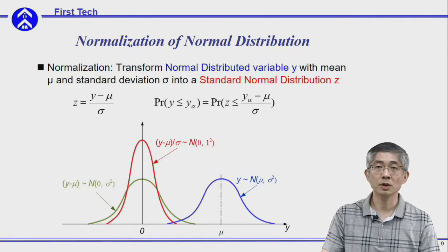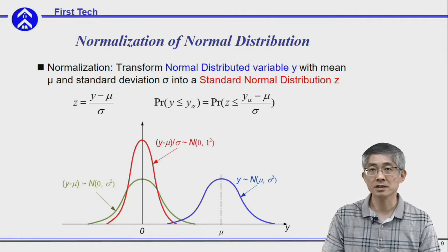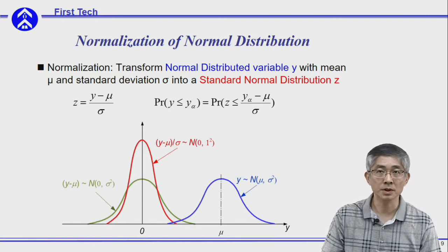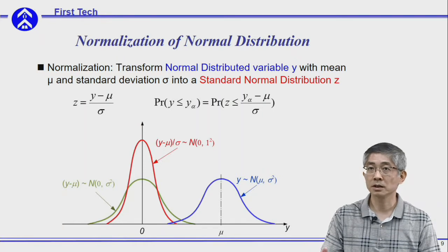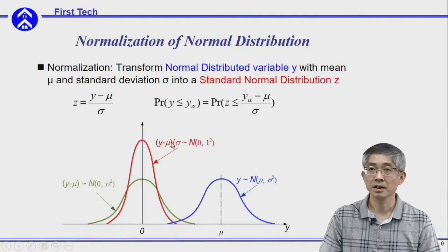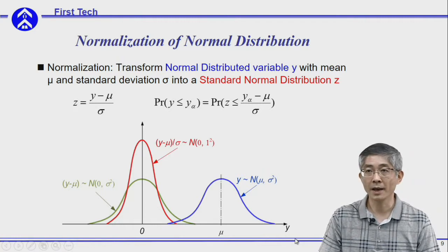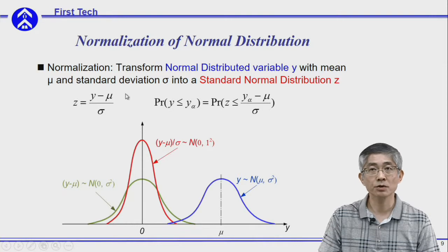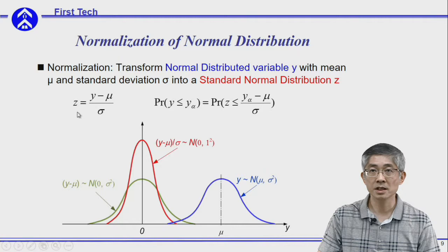However, I still want to show you the classic technique to normalize your variable into a standard normal distribution and use the previous table to find the corresponding probabilities. Assume your variable is y with mean mu and standard deviation sigma. You can use this equation to normalize your variable y into z, and z will follow the standard normal distribution.